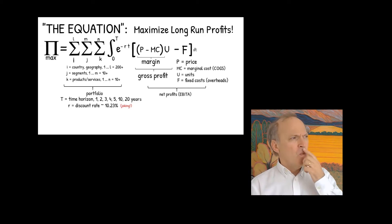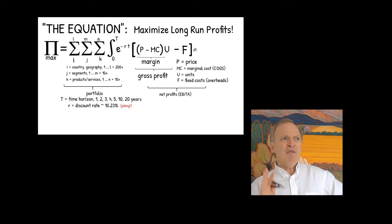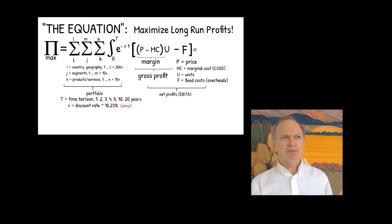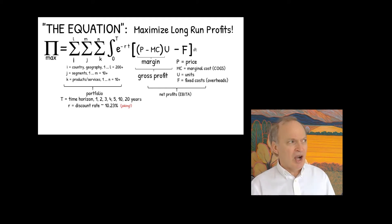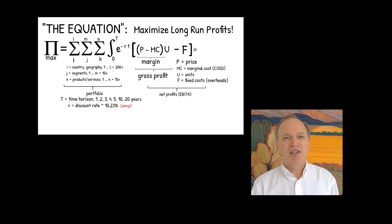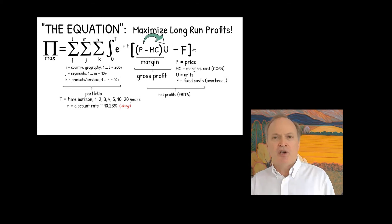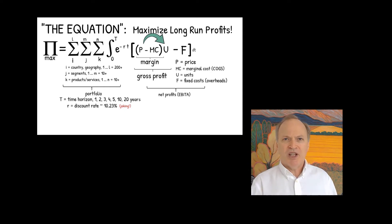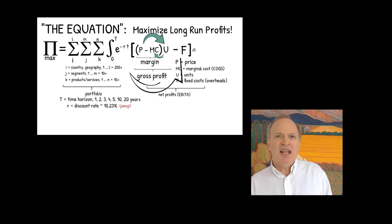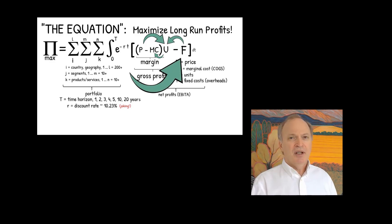As you jack your price up, your units fall. As you expand internationally, your fixed costs go up — and hopefully as fixed costs go up you sell more units because you have more salespeople, and as you sell more units your marginal cost might go down because of economies of scale. These variables interact with each other. So the tricky part about business is those interaction effects. Understanding the constraints becomes the money issue — if I don't know the constraints, I'm going to have a bad solution to that equation.